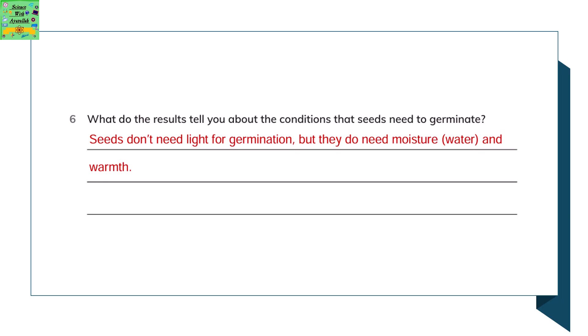So, according to this activity, what do the results tell you about the conditions that seeds need to germinate? The seeds do not require sunlight for germination, but they do need moisture — that's water — and warmth.